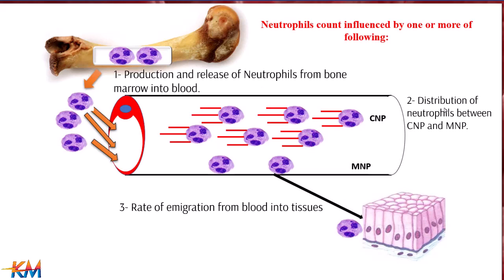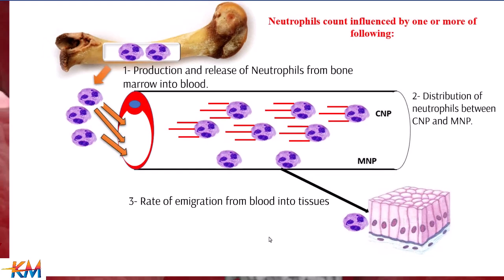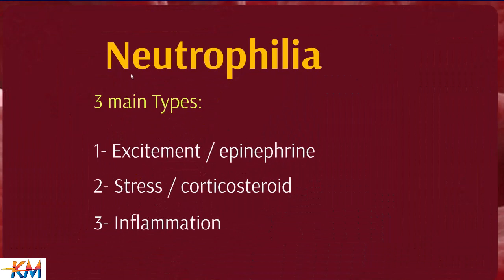Therefore, these three factors affect neutrophil count. Neutrophilia has many causes, but there are three main ones: excitement, stress, and inflammation. Excitement is called epinephrine neutrophilia, stress is called corticosteroid neutrophilia, and the third is called inflammatory neutrophilia. These three causes will be discussed fully, including their causes and differentiation.